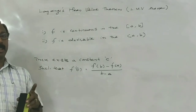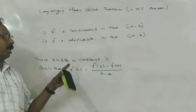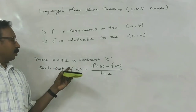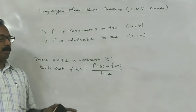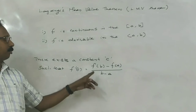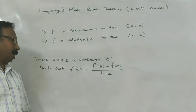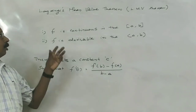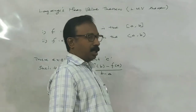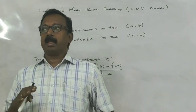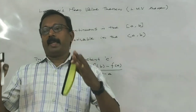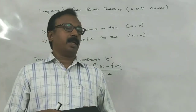In Rolle's theorem, the constant C is obtained by putting F dash C equal to zero. But in Lagrange's theorem, C is obtained by putting values into the equation F dash C equals F of B minus F of A divided by B minus A. The difference between Rolle's and Lagrange's is that in Rolle's theorem, symmetrical curves are used — meaning the distance from A and from B are the same.